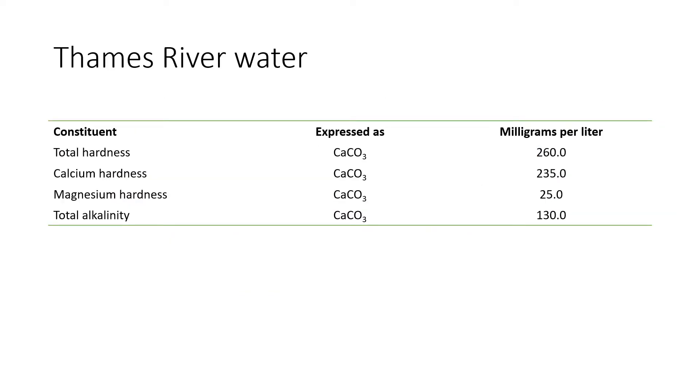Let's look at the water quality for the Thames River. You're told that the total hardness is 260 milligrams per liter as calcium carbonate. The carbonate hardness is 235 milligrams per liter. The magnesium hardness is 25 milligrams per liter, and the total alkalinity is 130 milligrams per liter. So let's think about this in terms of a bar chart.